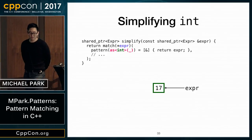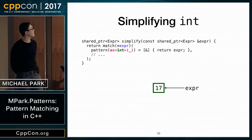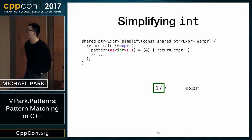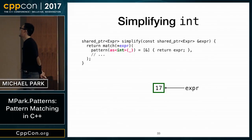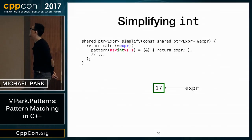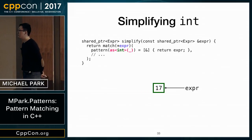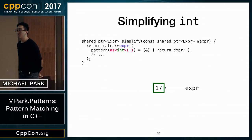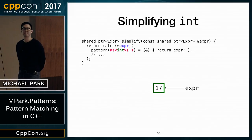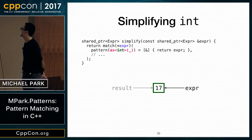First case: simplifying an int. We take the expression tree, match the expression, and if it holds an int — we don't even care what the value is — we return the expression directly, as another shared_ptr pointing to the same integer.